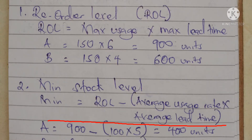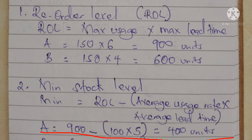The next level is the minimum stock level. The formula for calculating minimum stock level is: reorder level minus (average usage rate times average lead time). For product A, the reorder level was 900 units.